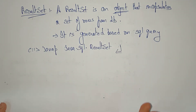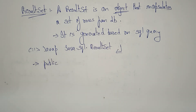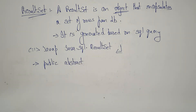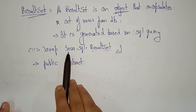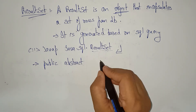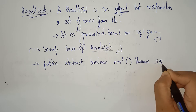When you enter that on the command prompt, you will get many methods and constructors. I'm taking only two methods useful for the program. You don't need to memorize all methods — whenever you want to know what methods are present in ResultSet, just type: javap java.sql.ResultSet.